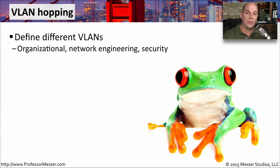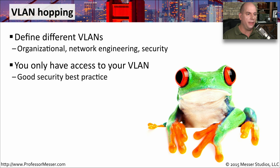We've talked in a previous video about the importance of using VLANs and how you would configure VLANs on your switch. You might have VLANs set up for organizational purposes — the network engineering team on one VLAN, the marketing team on another, the accounting team on a third. Ideally, those VLANs are completely separated from one another. It's a good security best practice to have everyone segmented out on their own individual VLAN, where they can only communicate with users on the same VLAN. You would have to go through a router, and in many cases a security device, to communicate between different VLANs.